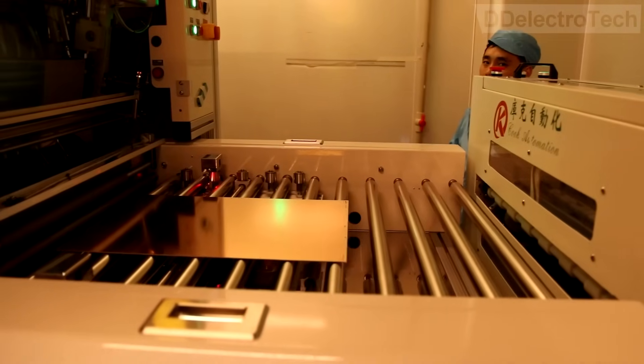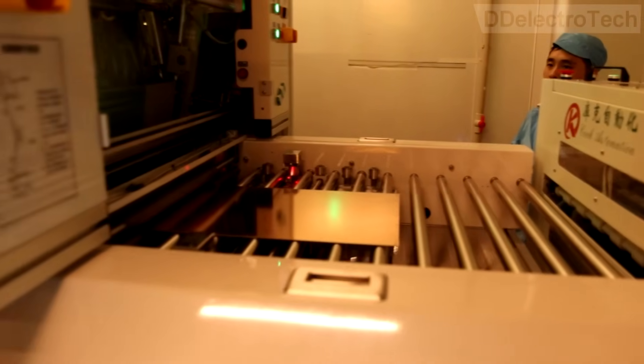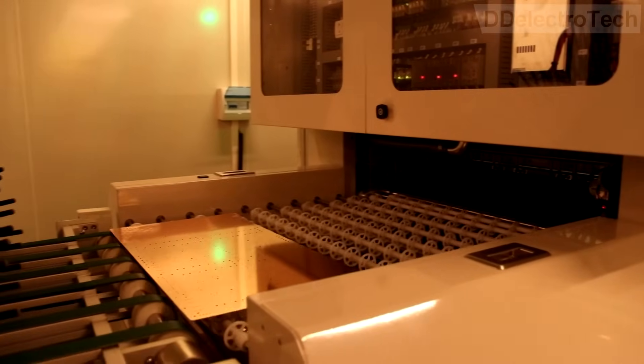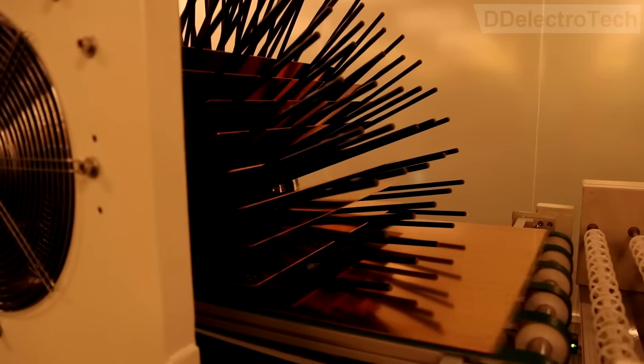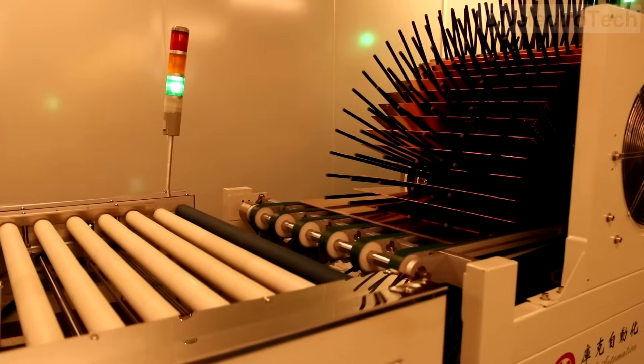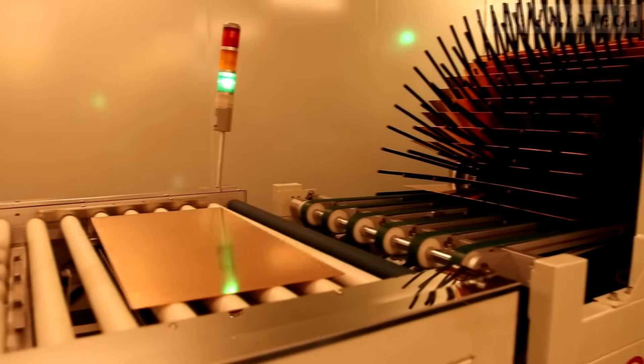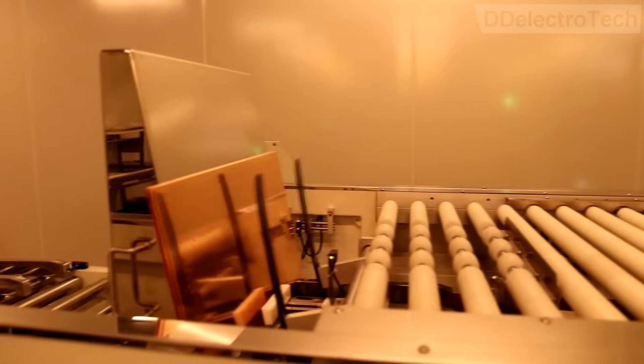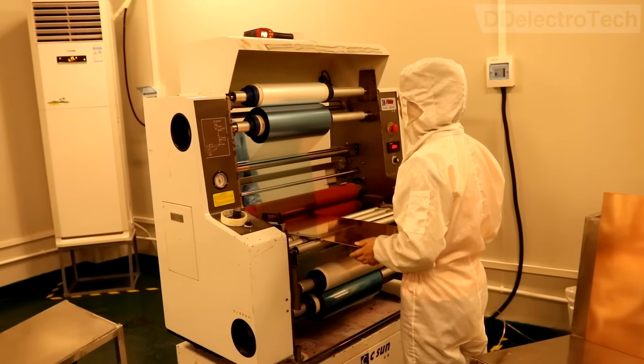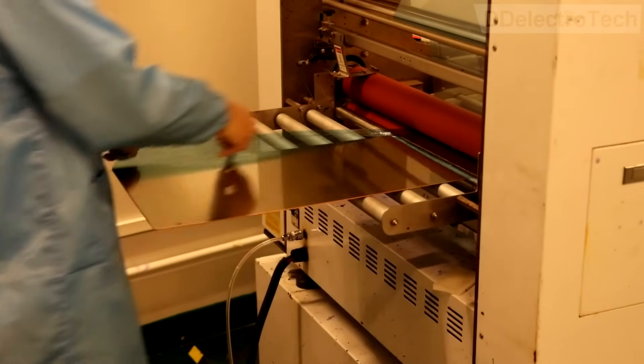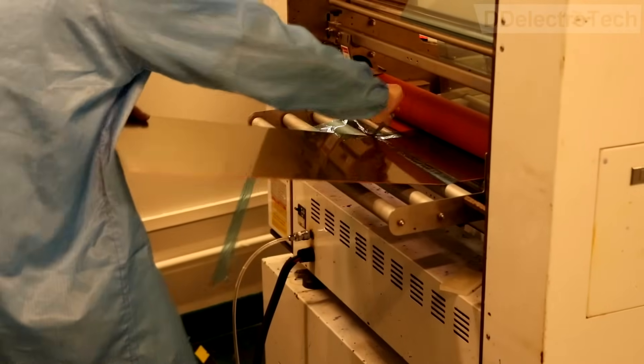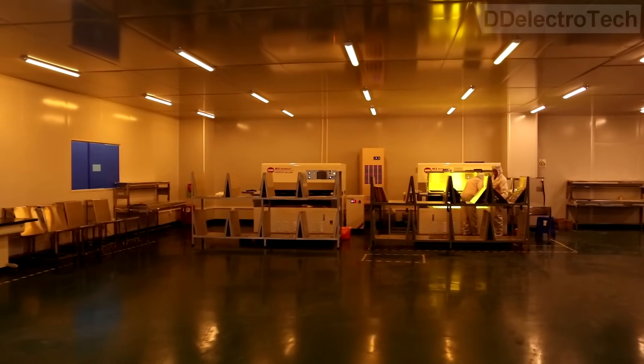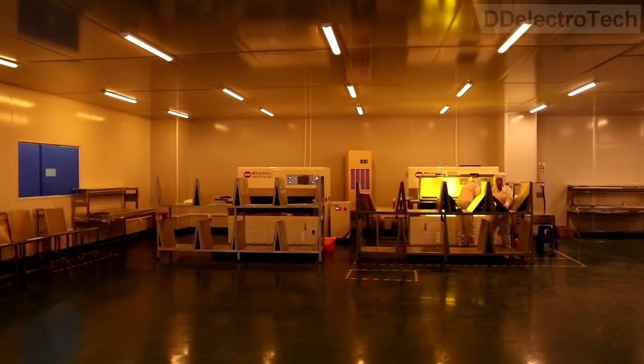Then the panel is first coated with a layer of photo-sensitive film, the photo resist, which is hot rolled onto the copper. This machine does this automatically, or sometimes this process is done manually. This film is blue light sensitive, so all the lights in the room are yellow so the light does not affect this film.